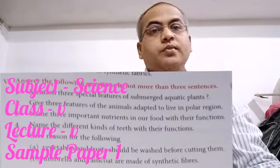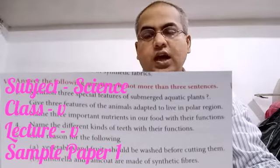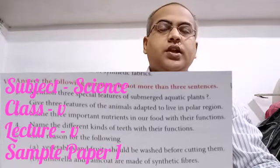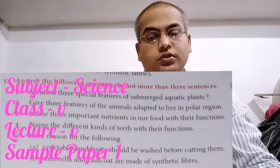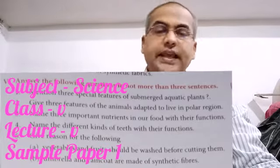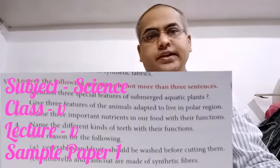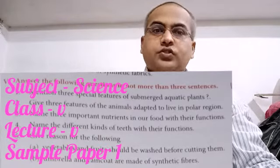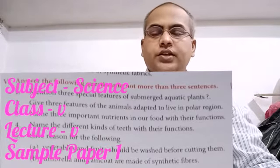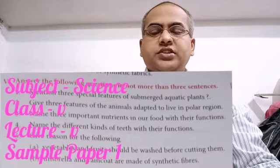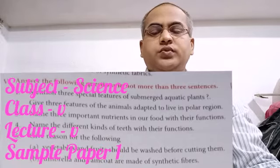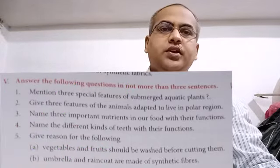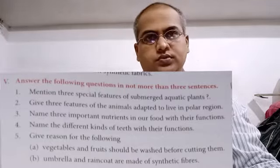So question number 5 is: answer the following question in not more than 3 sentences. The first question is: mention 3 ways with examples by which new plants can be grown.